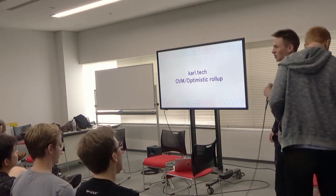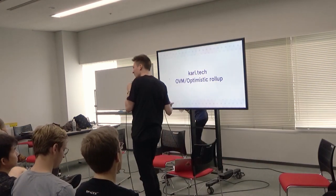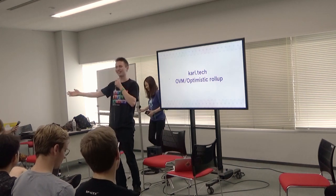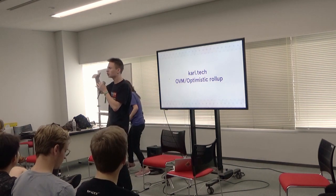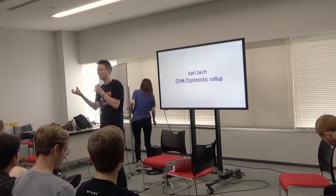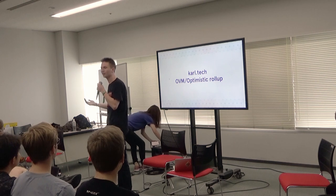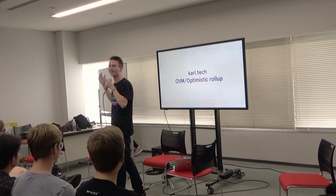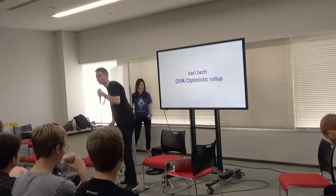Next up we have Carl. One of Casey's questions was: can you just use a Snark for the Merkle proof and then calculate the actual state transition somewhere else? In fact you can, and one of those places is with a dispute game. So I'm going to talk about Optimistic Rollup.